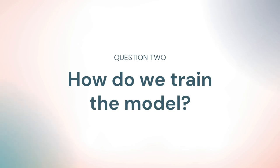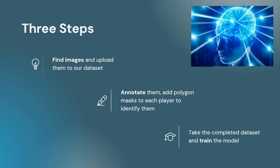So how are we going to train this machine learning model? The first thing we need to do is build a dataset — find images on the internet and upload them, then annotate and label the objects within them. In our example, we're going to use polygon masks to outline each player on the field. Once you build that dataset, you're going to use it to train a model. You feed all that annotated data into a model, and the model uses that to learn how to do it itself. If you give it enough good quality data, it should be able to learn pretty well.